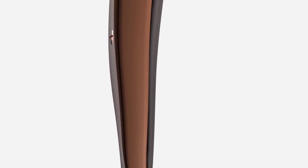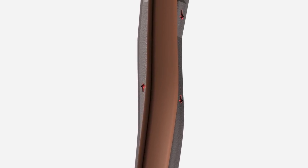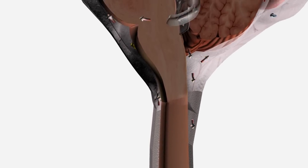CSF then flows back up the spinal cord, and it joins the flows from the fourth ventricle and the superior cistern.